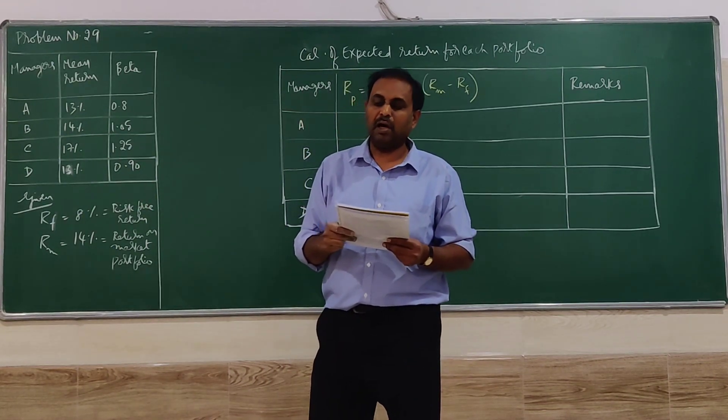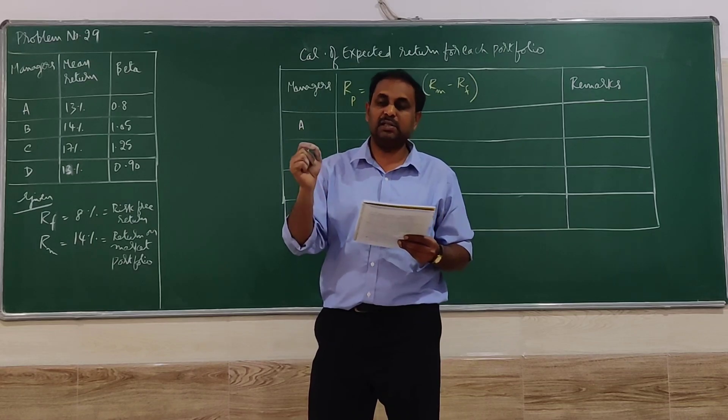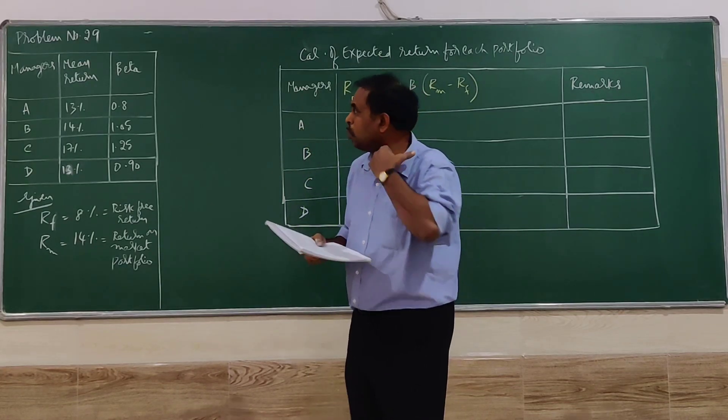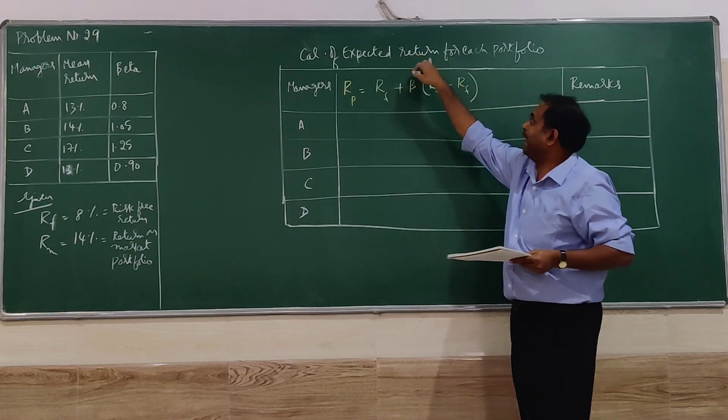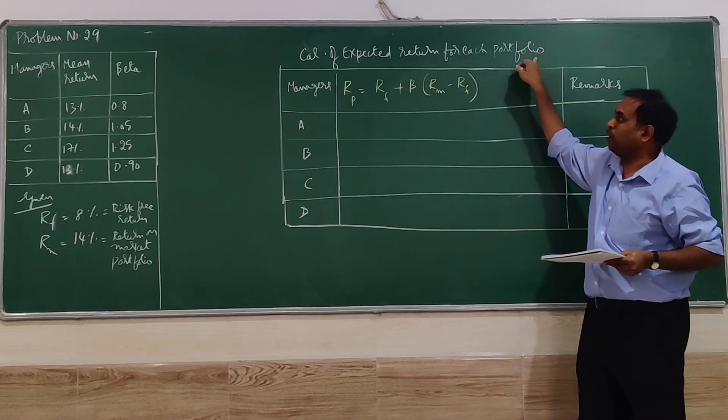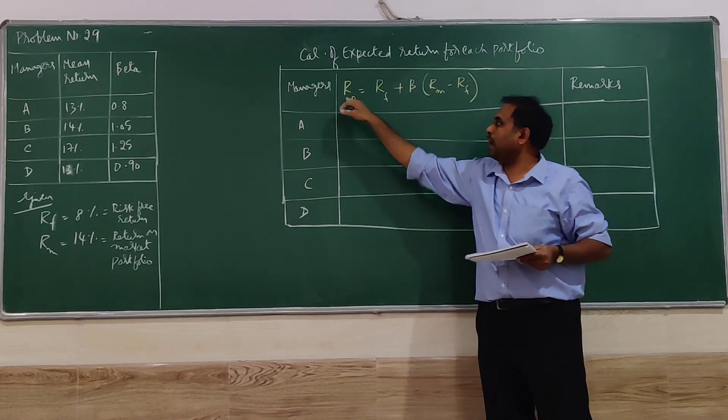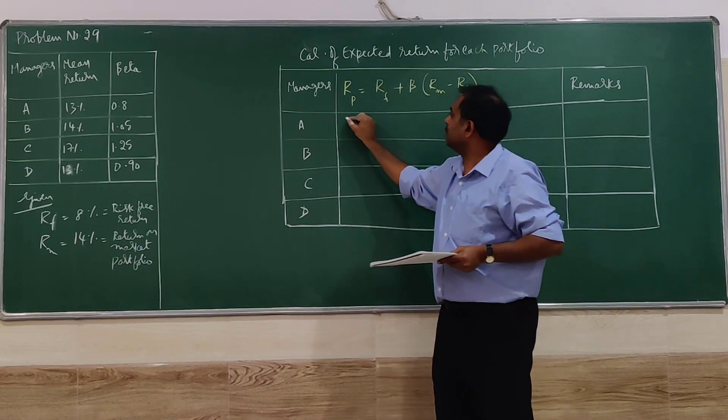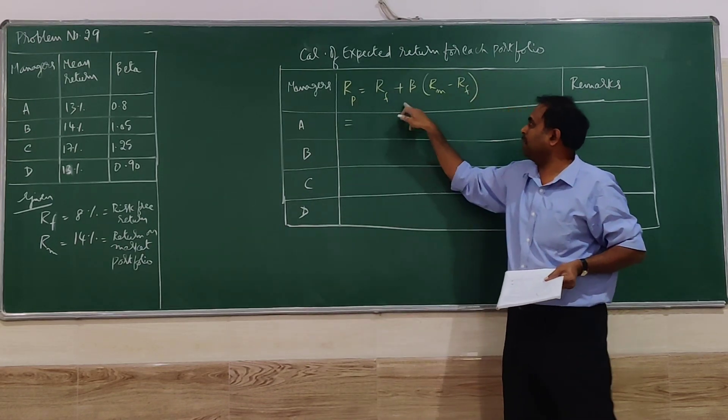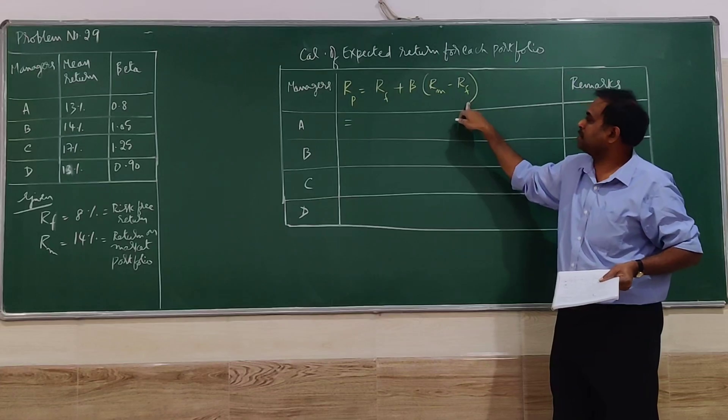We need to select the one with the best performance. The expected return of each portfolio will be calculated. That is equal to RF plus beta multiplied with RM minus RF.